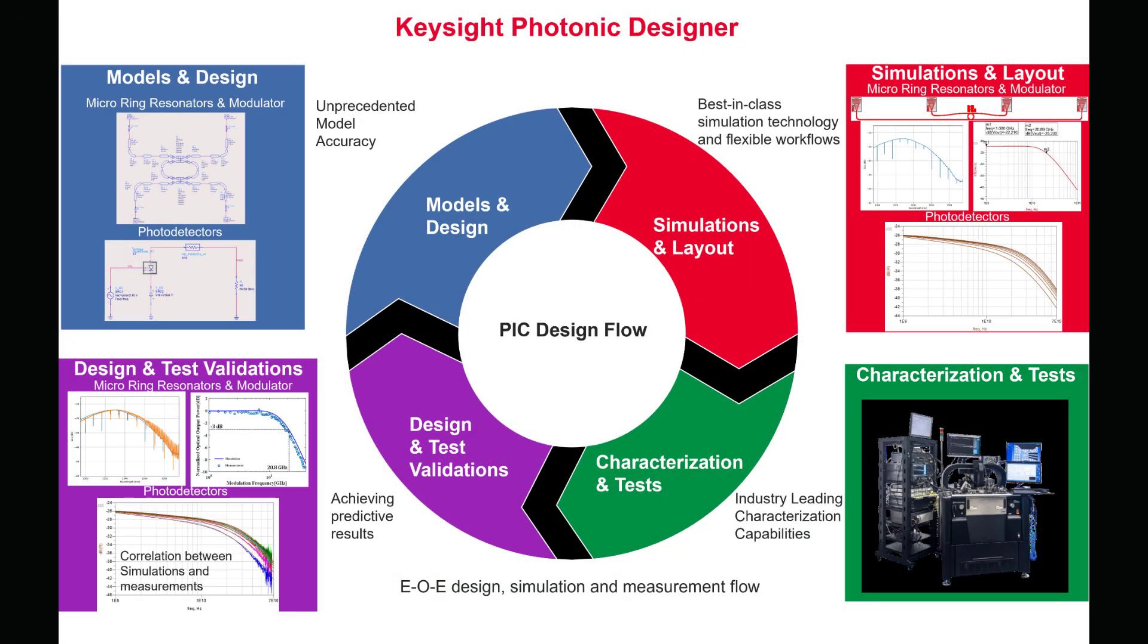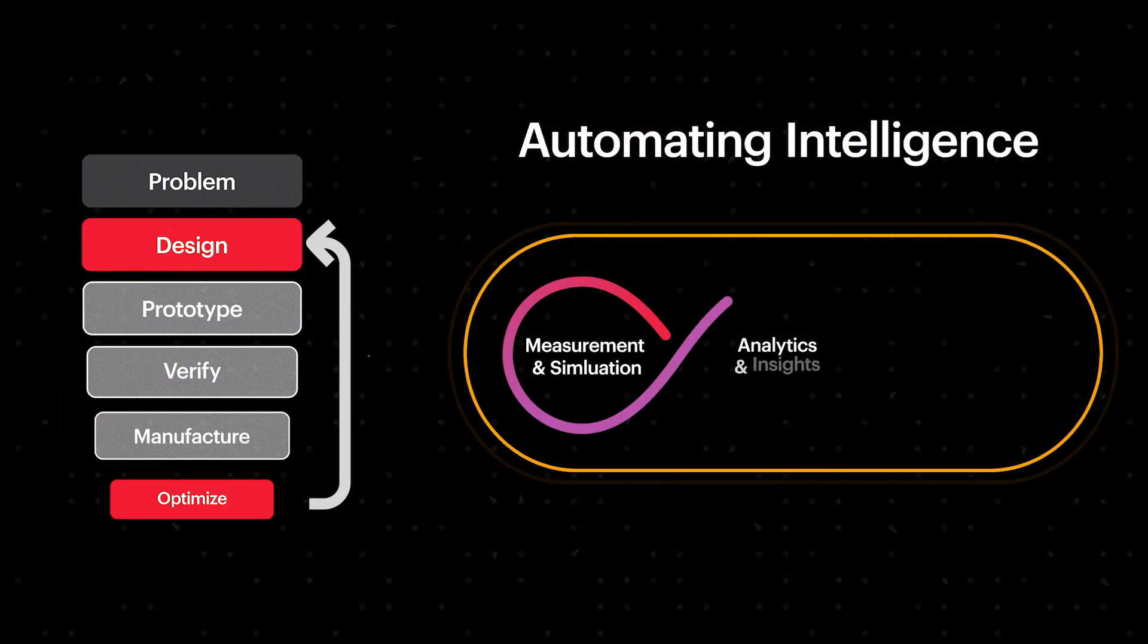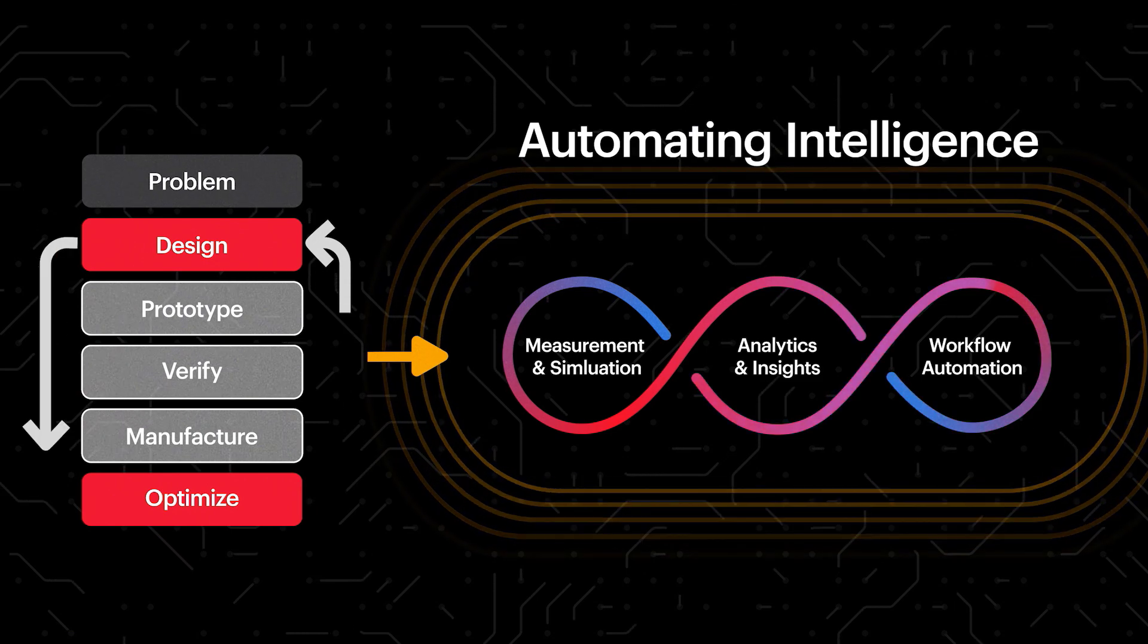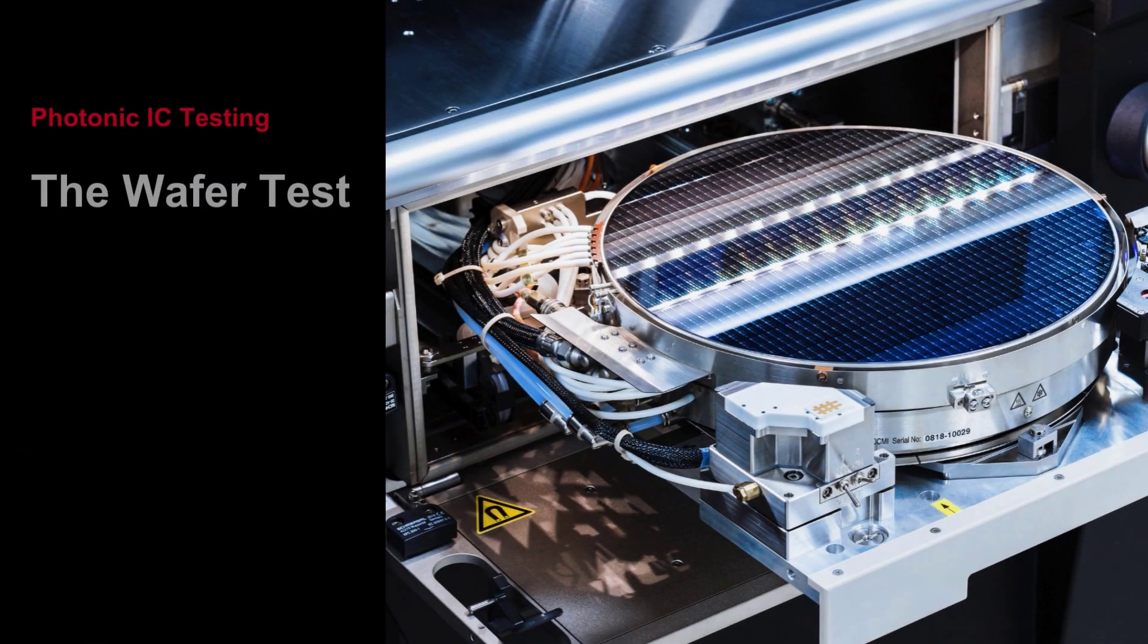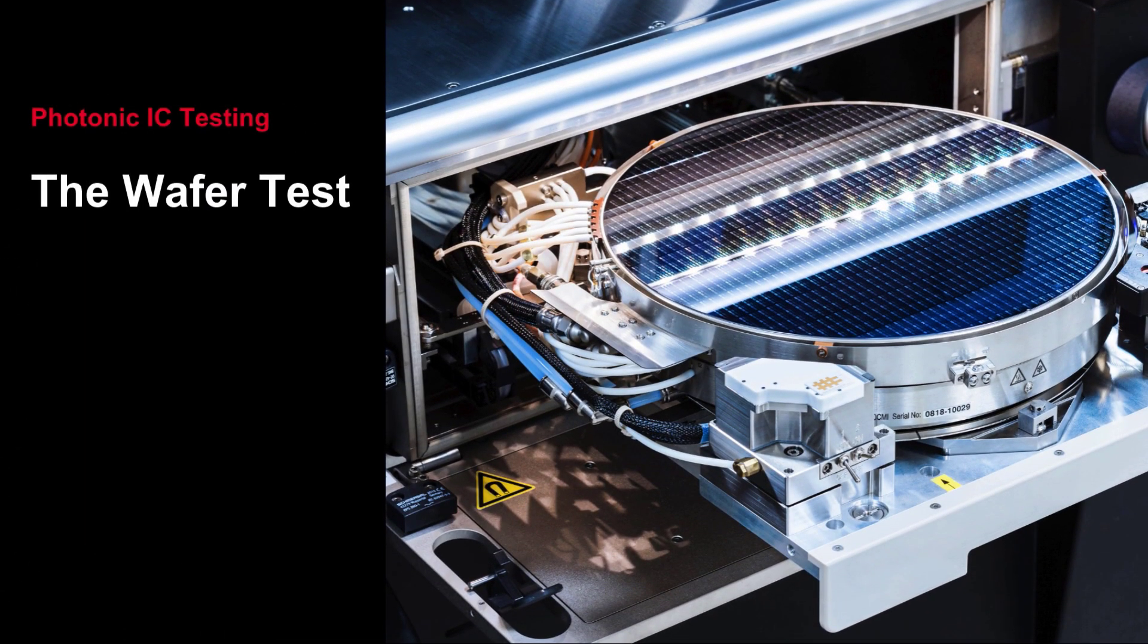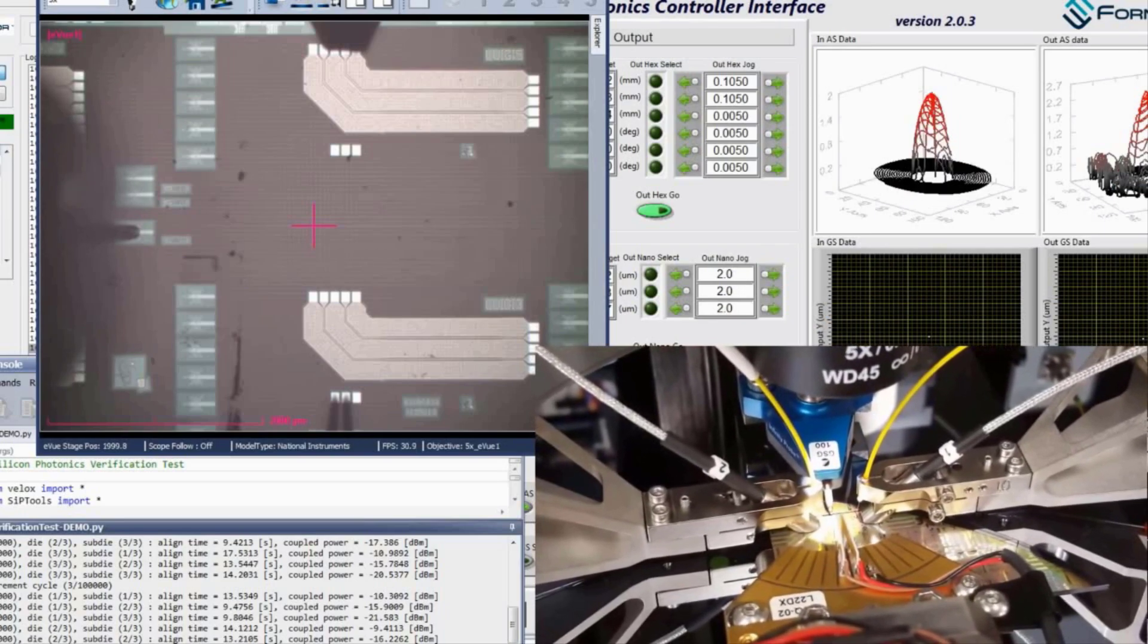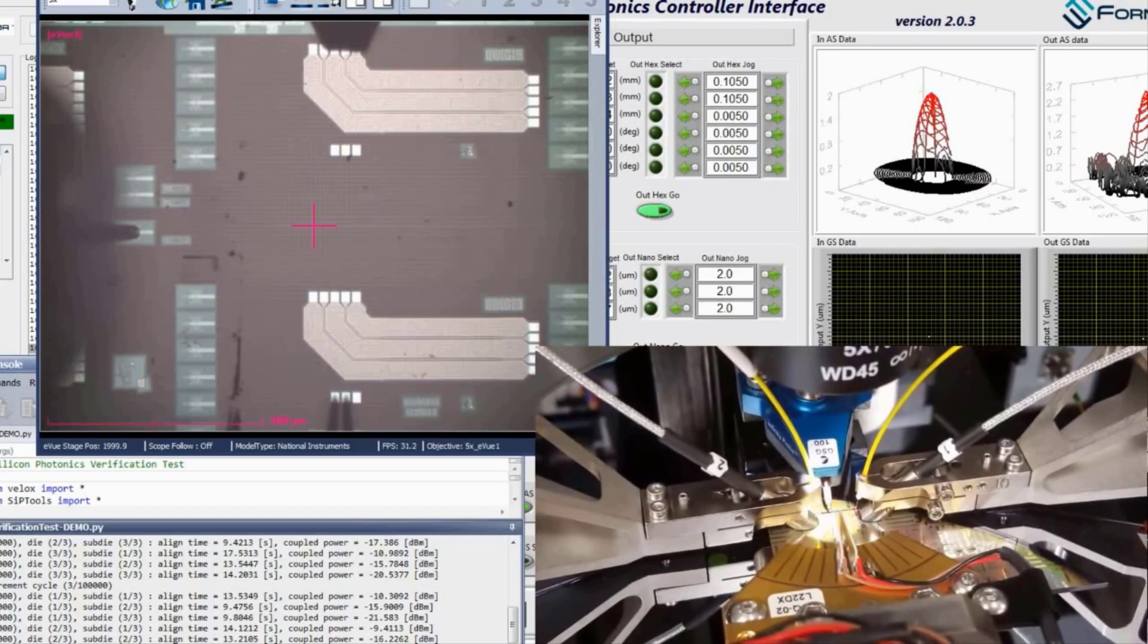These automation tools enhance test quality and significantly improve efficiency. The wafer test: the 300-millimeter wafer tester uses Keysight's PathWave Test Automation to control DC, optical, and RF probes and test each device on the wafer.